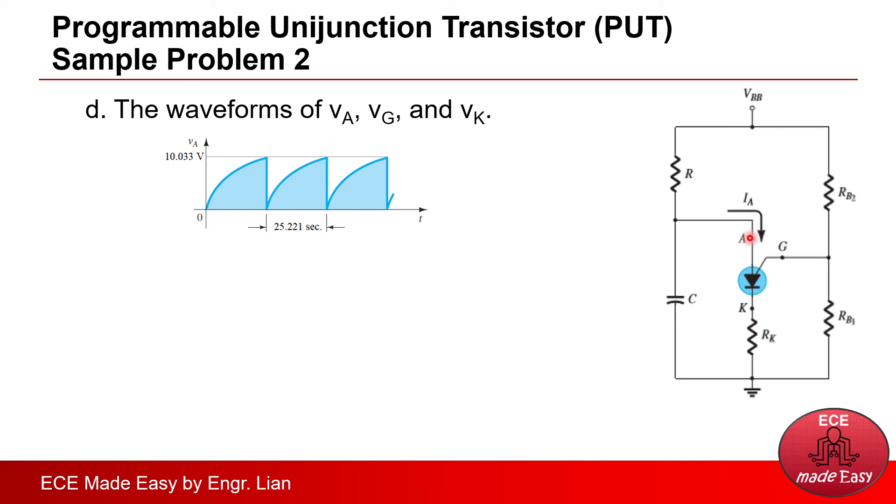Remember that VA ranges from 0 up to VP, where it turns on. And the span of period from 0 to VP is the charging of this capacitor. That's why this is the figure of the waveform.